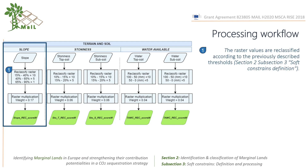First, the raster values are reclassified according to the previously described thresholds, where layers with two or three values are obtained. The raster reclassification involves a modification of the value of an image in whole or in part, grouping the values presented by the input image into user-defined range classifications.